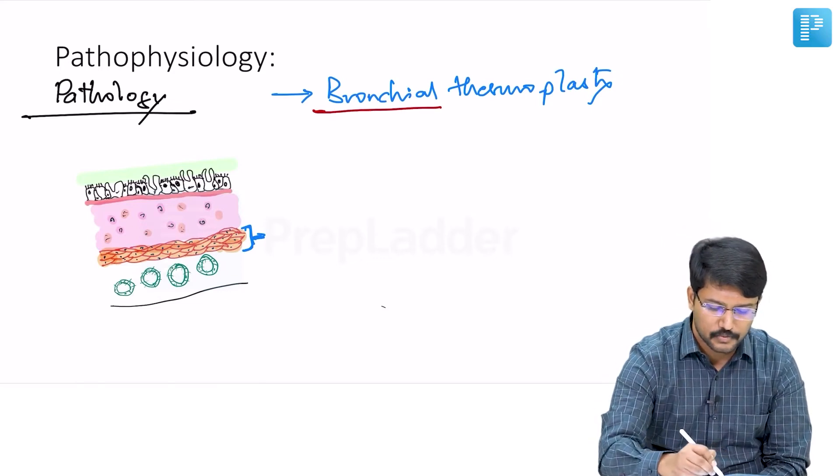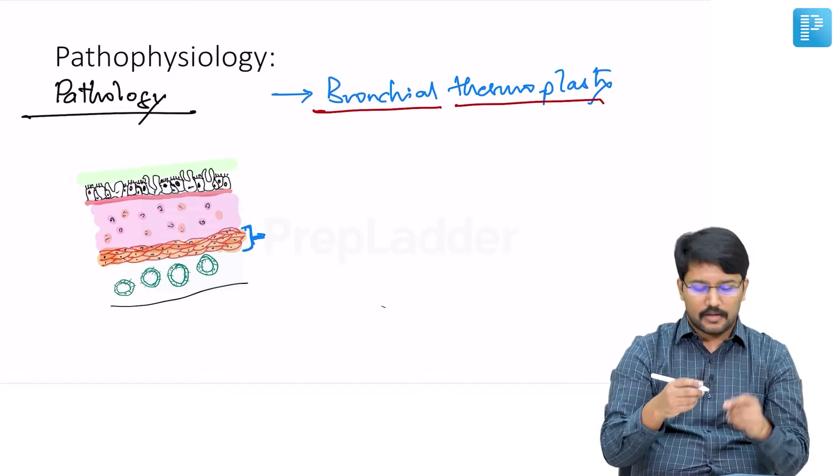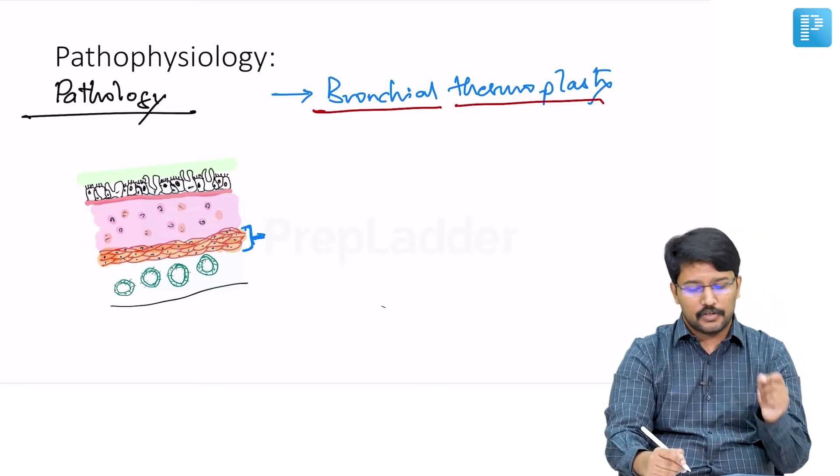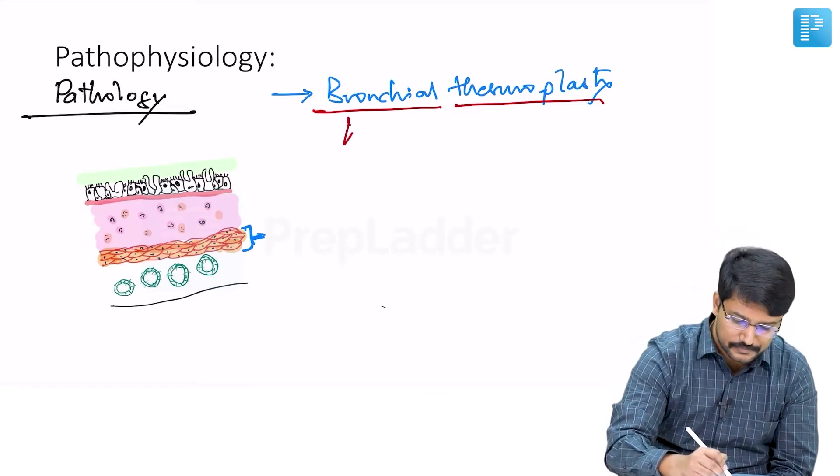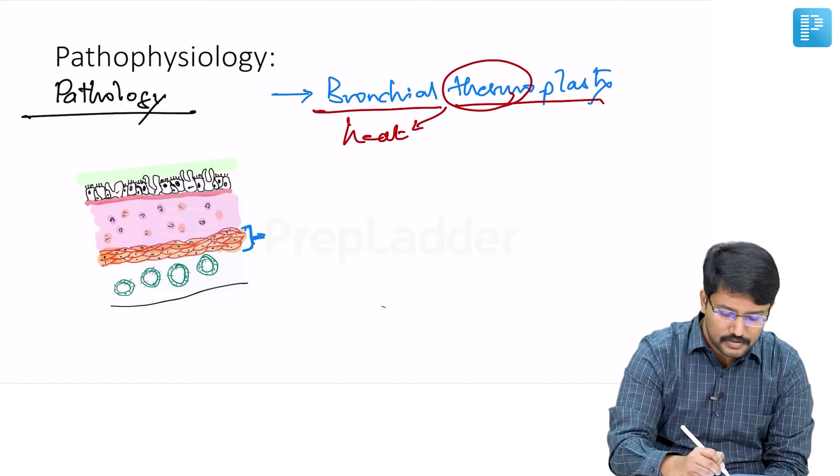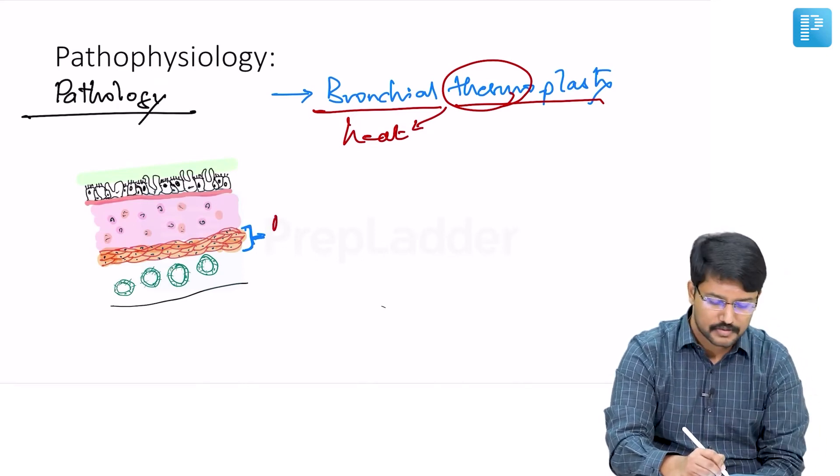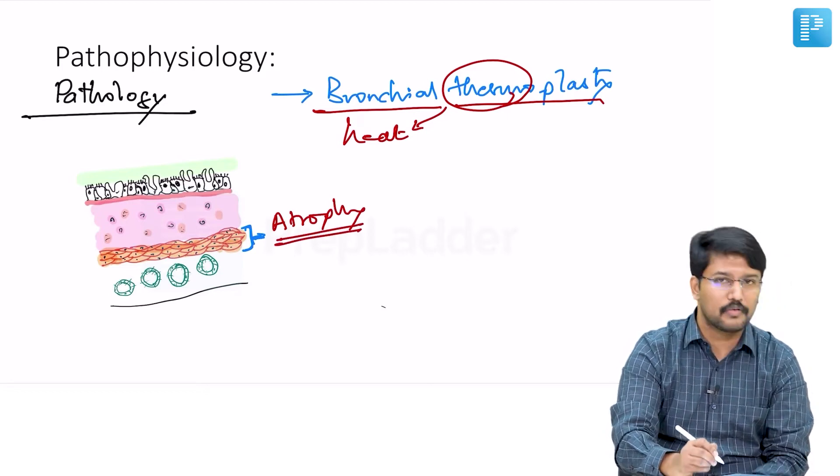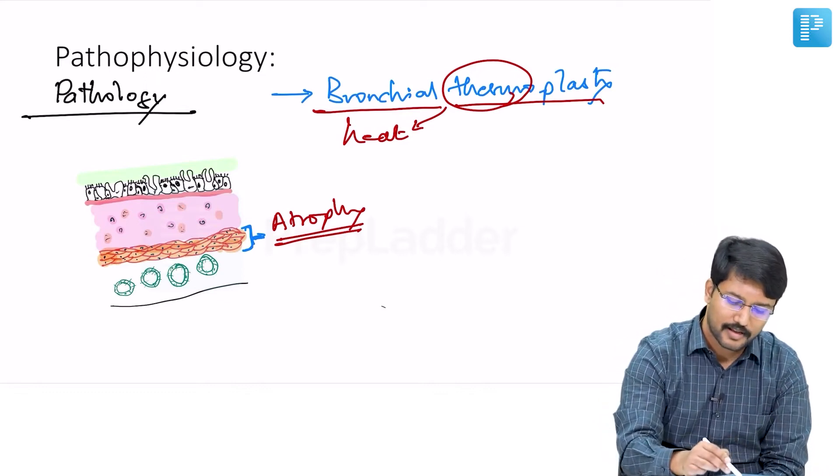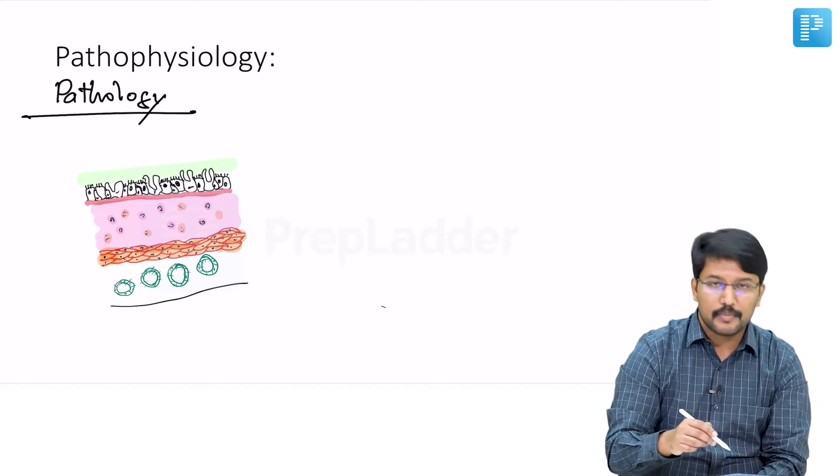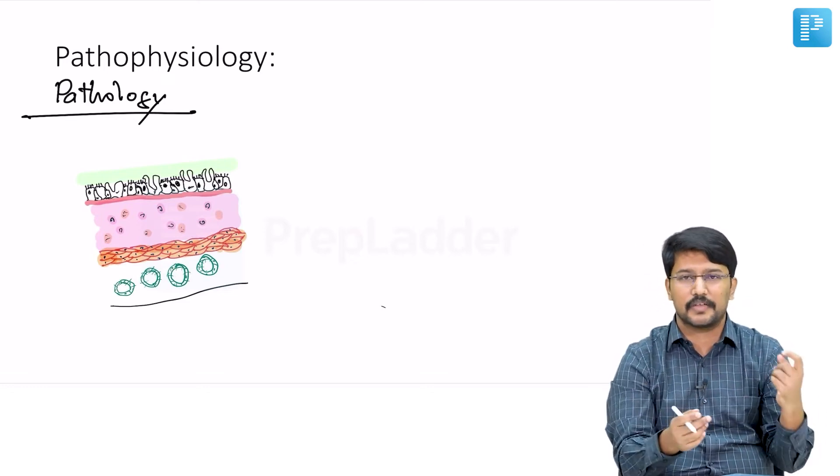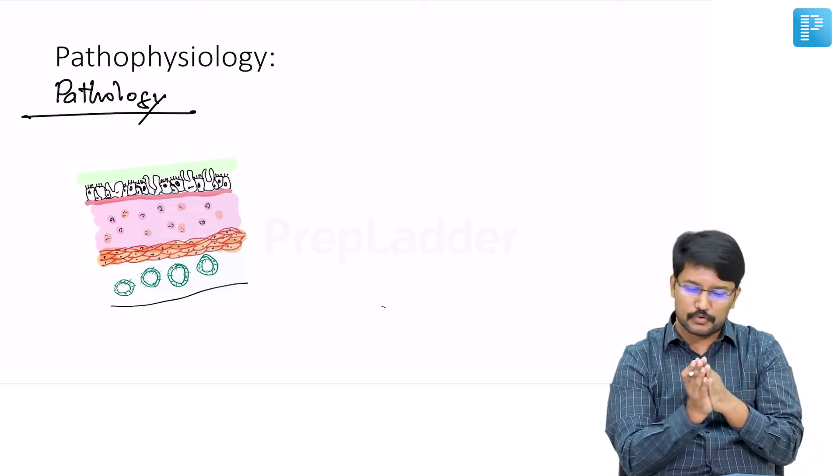In bronchial thermoplasty, we expose the bronchial mucosa and thus indirectly the bronchial smooth muscles to high intensity heat. This thermoplasty reduces the hypertrophy or introduces atrophy of the bronchial wall smooth muscles, which significantly reduces asthma attack episodes. Studies have consistently proven the efficacy of bronchial thermoplasty, and it is increasingly being used across centers wherever there is availability of a bronchoscopy suite.